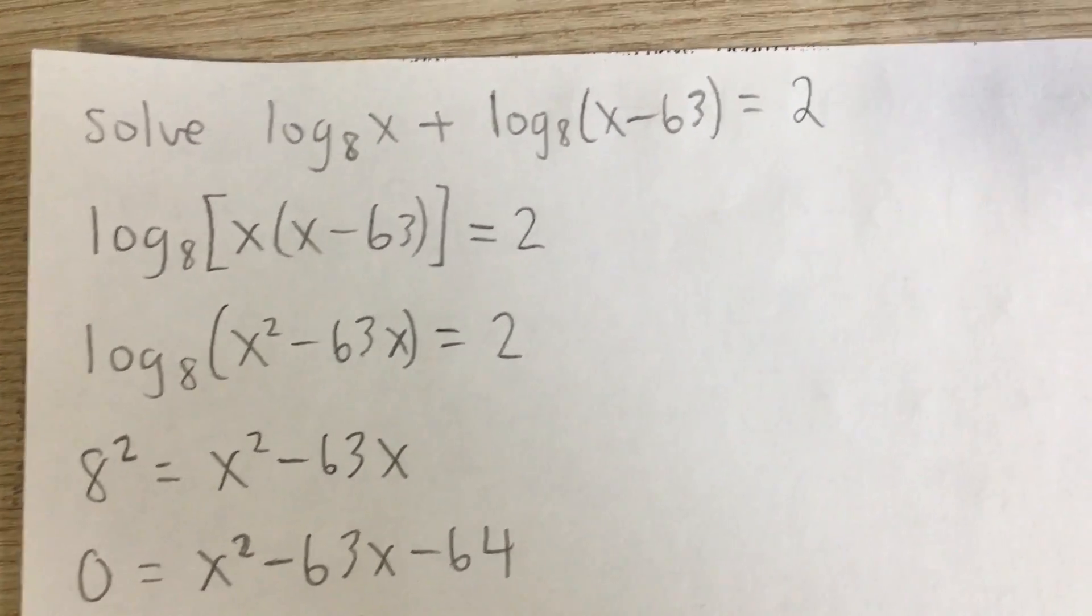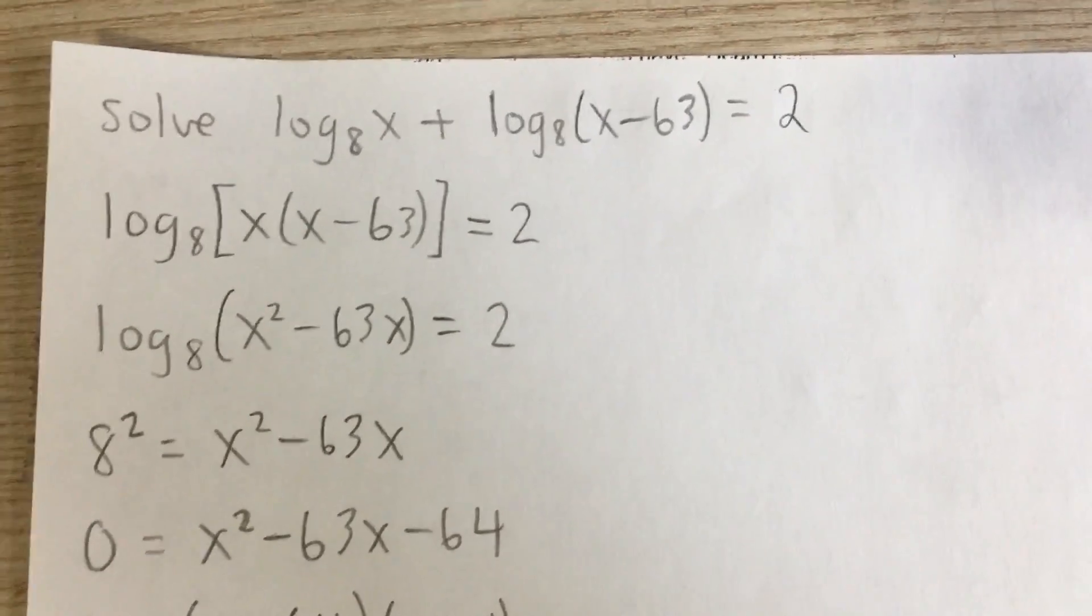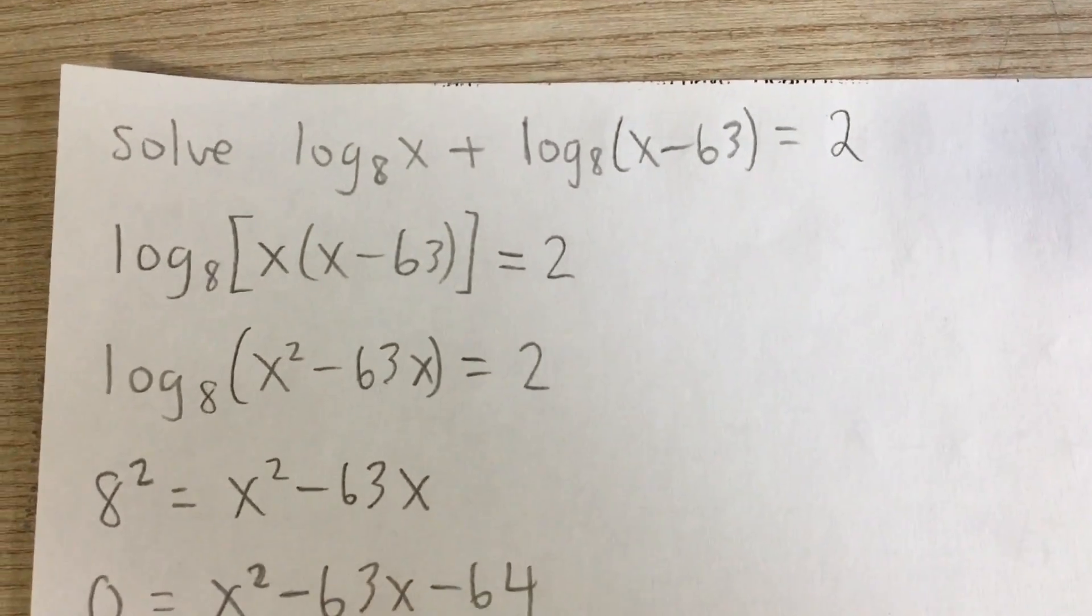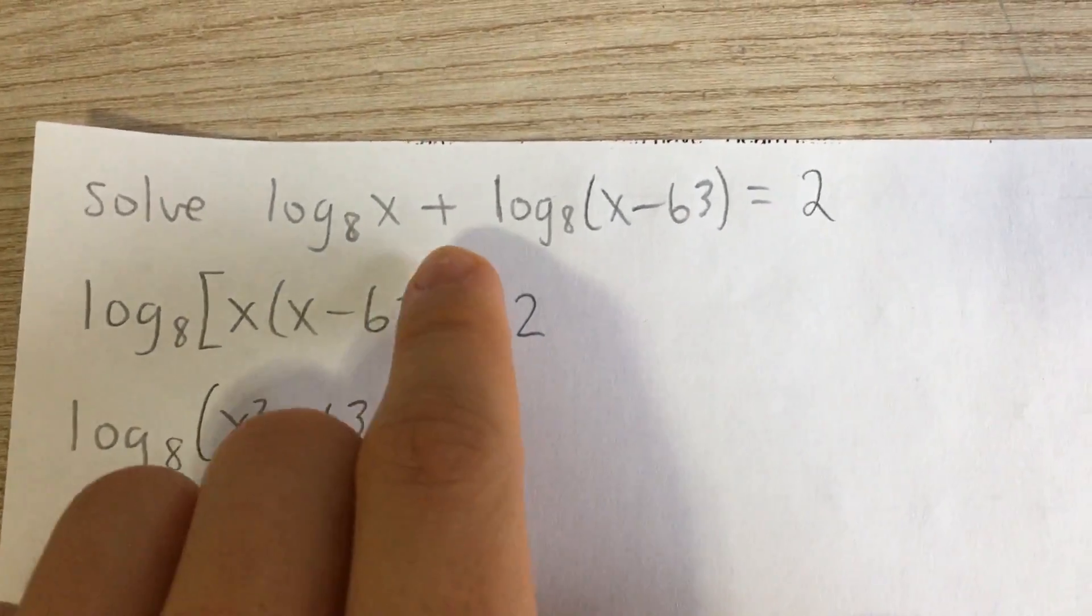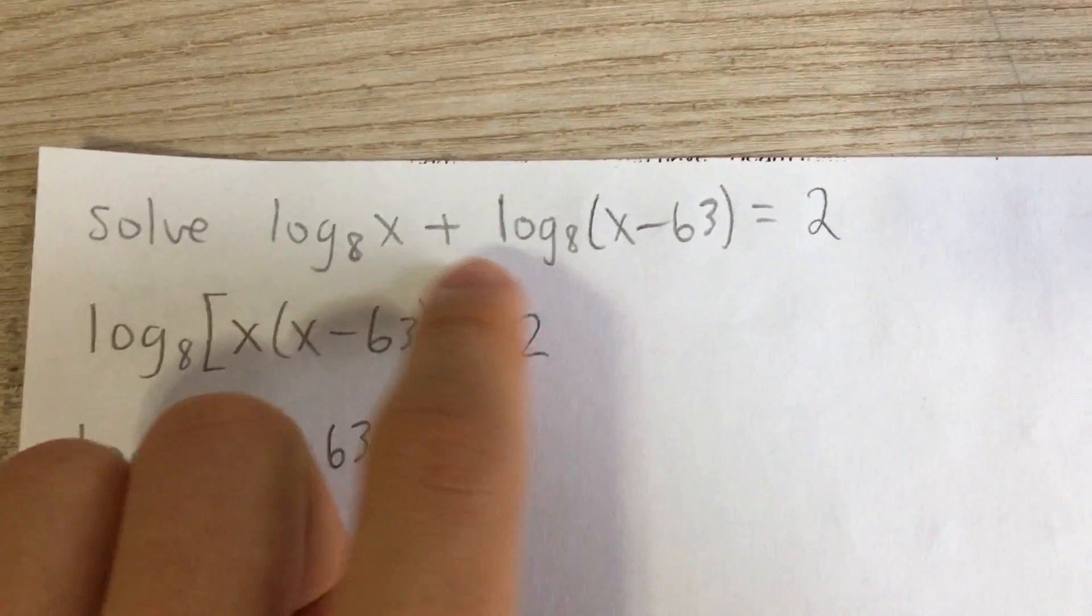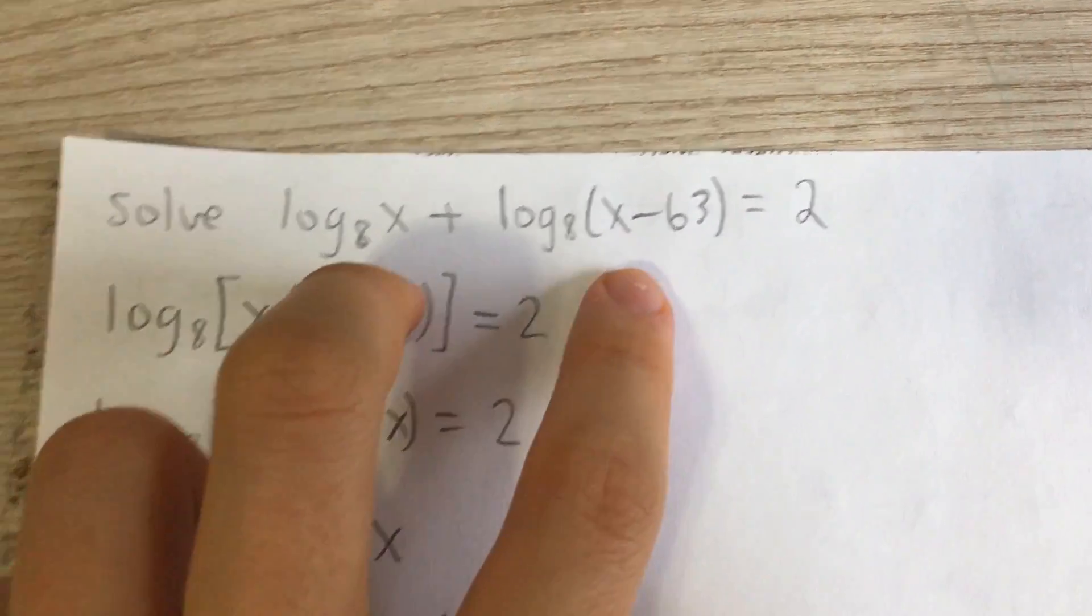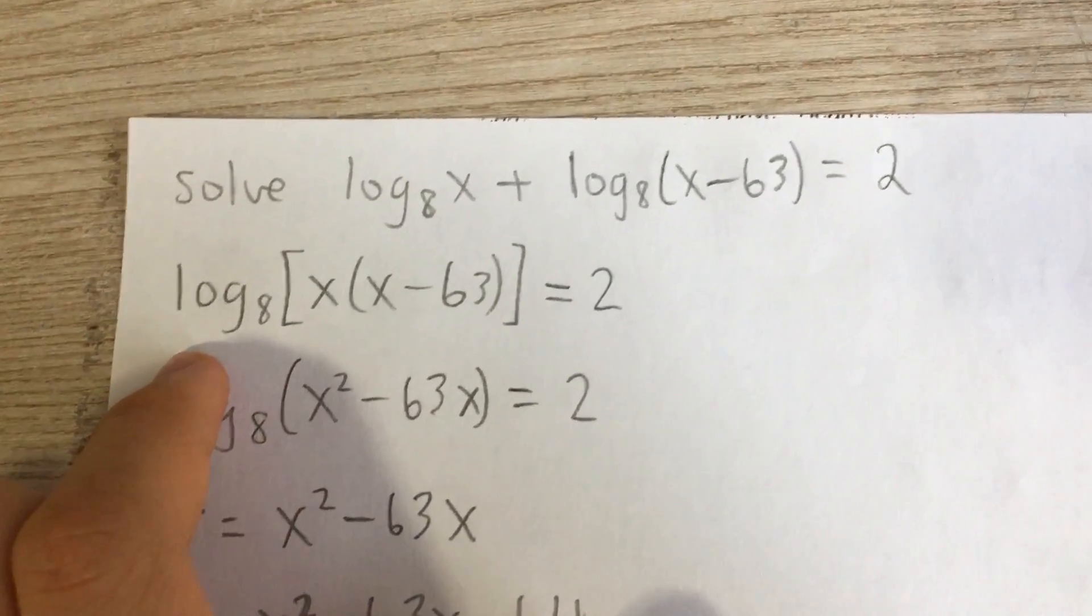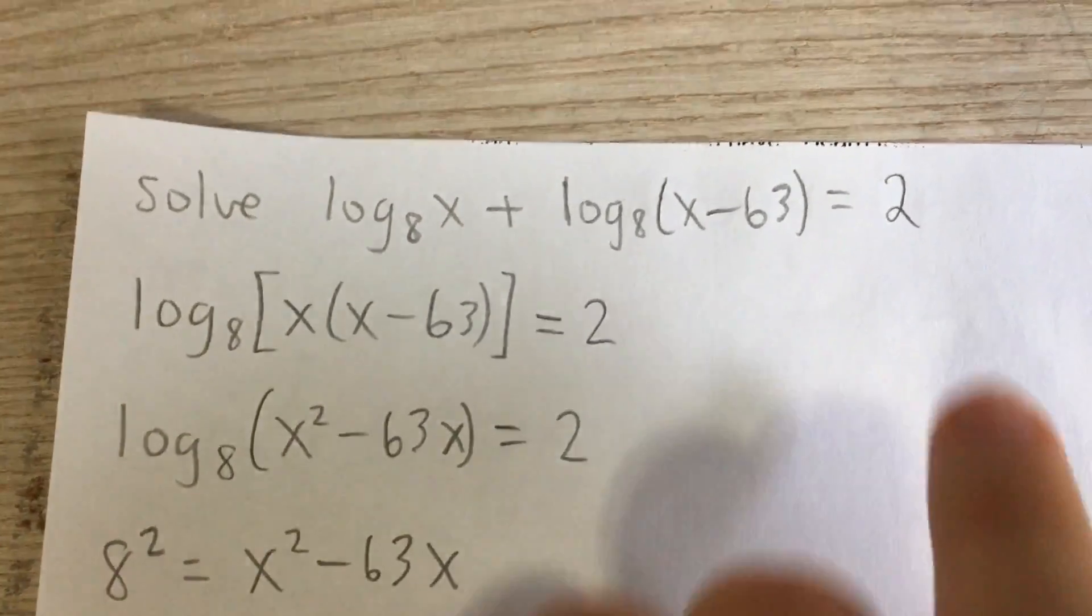Solve log base 8 of x plus log base 8 of x minus 63 equals 2. First off, we can combine these two logarithms on the left side of the equation because we know the sum of logarithms with the same base is the product of their arguments, the part inside. So we can combine them into log base 8 of x times x minus 63. On the right we have 2.